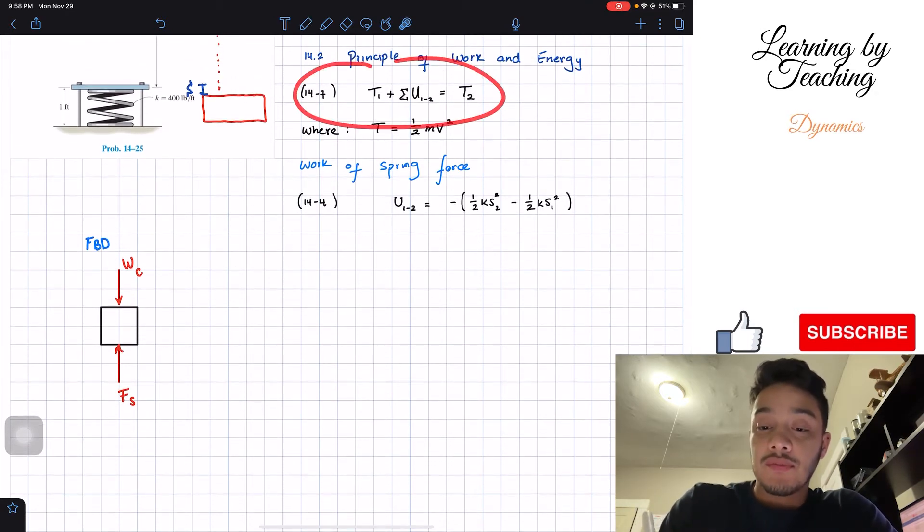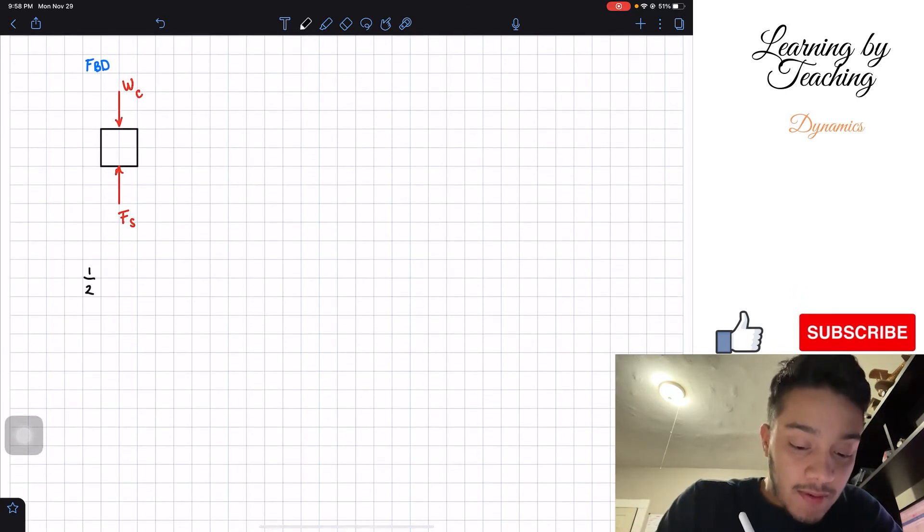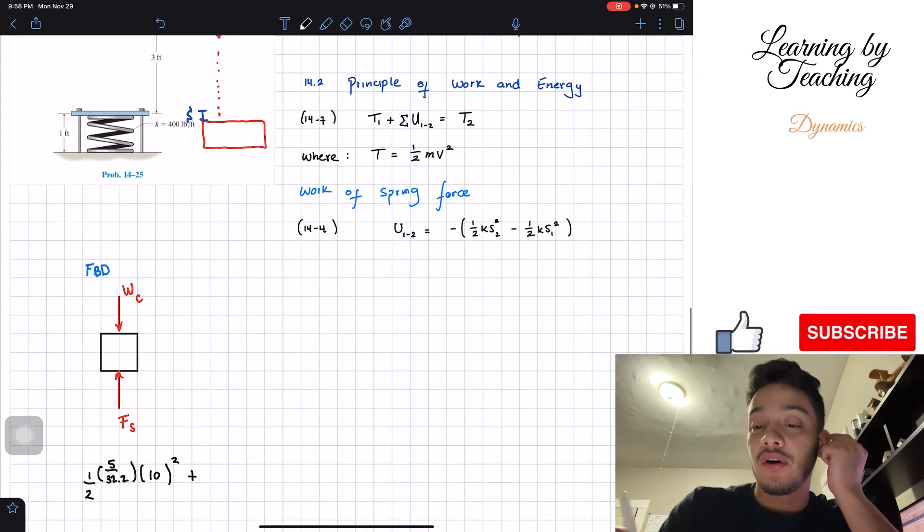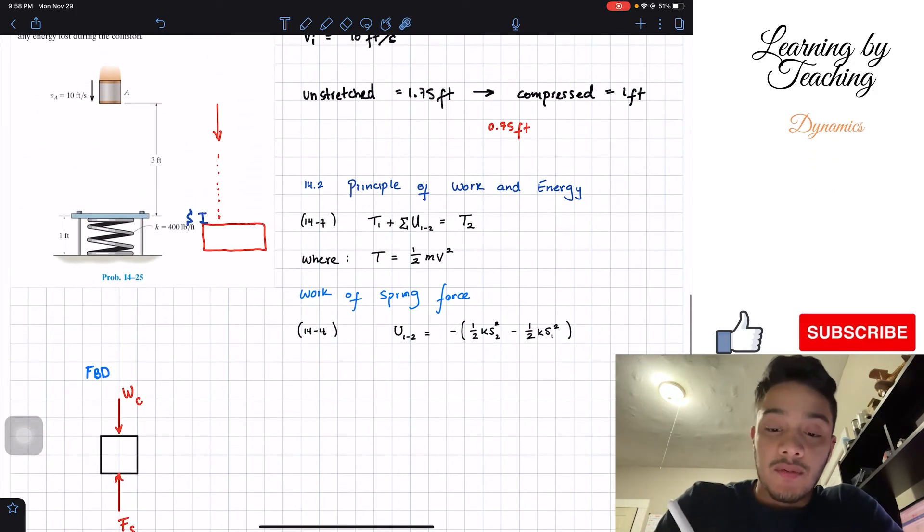If we want to utilize the principle of work and energy, let's just start with this. We're going to have one half the mass, so we have one half the mass which is 5 over 32.2 times the velocity squared which is 10 feet per second. Then we're going to have plus and we need to do the summary of work. Let's start with the first one, our force given by the weight. The work is going to be the weight, which is a force, 5 pounds times the distance that it traveled.